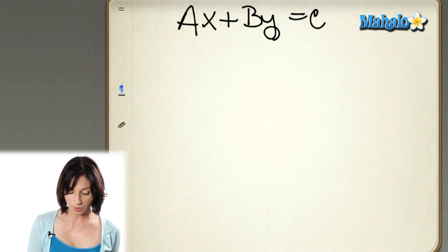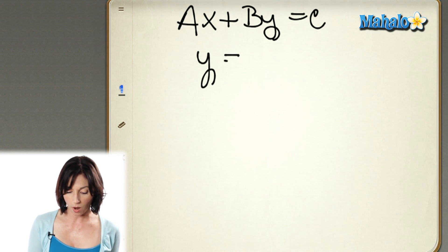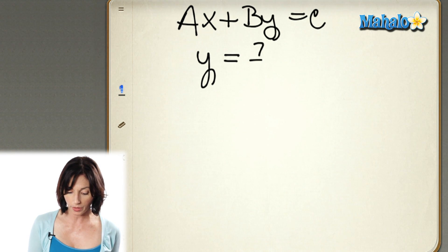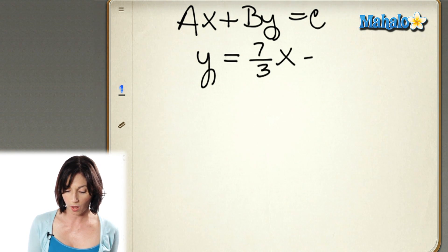So you usually get the equation of a line in slope-intercept form first, and then you use algebra to rearrange it and put it in standard form. So let's take a look. Let's use this equation of a line: y equals 7 thirds x minus 12.